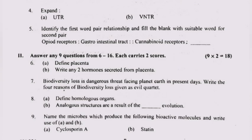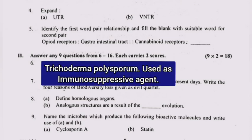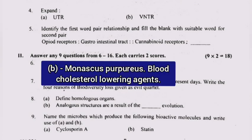Question 10: Name the microbes which produce the following bioactive molecules and write the use of A and B. A: Trichoderma polysporum — used as an immunosuppressive agent. B: Monascus purpureus — blood cholesterol lowering agent.